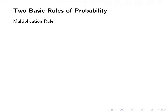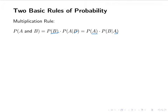The first one is called the multiplication rule. It says that the probability of A and B is the probability of B times the probability of A given B, or equivalently, the probability of A times the probability of B given A. The important part is to remember that the first probability is the same as the second part of the conditional probability.